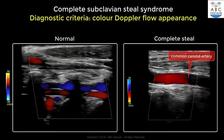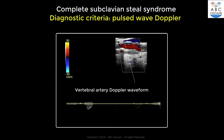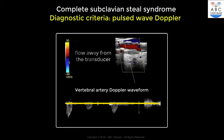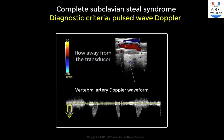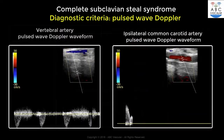A second criterion used to confirm the presence of a complete steal is the Doppler waveform. Simply obtain a Doppler waveform from the vertebral artery and observe the direction of the flow. In this example, the vertebral artery Doppler waveform is below the baseline, indicating that the flow is directed away from the transducer. This criterion is used to confirm the colour Doppler flow findings.